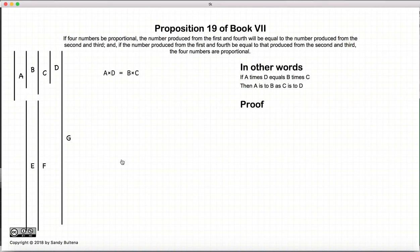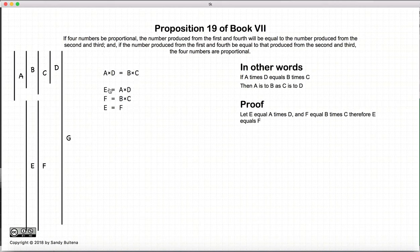Now we have to do the inverse, where we start off with four numbers where a times d is equal to b times c, and we want to demonstrate that these numbers are in proportion to each other. So again, we have that e is equal to a times d, f is equal to b times c, and e is equal to f. This is our starting proposition. So let's take another number where g is equal to a times c, just like before.